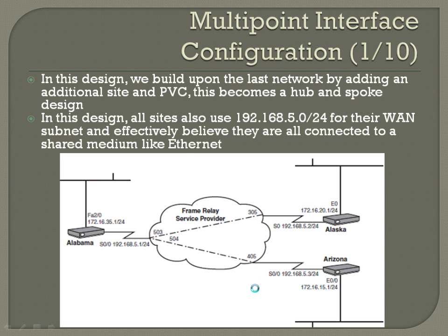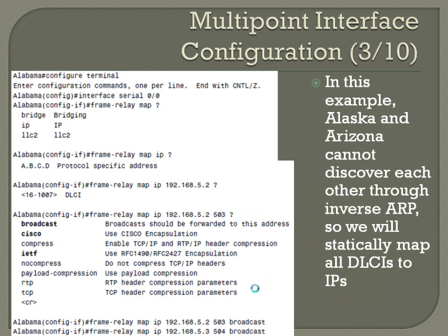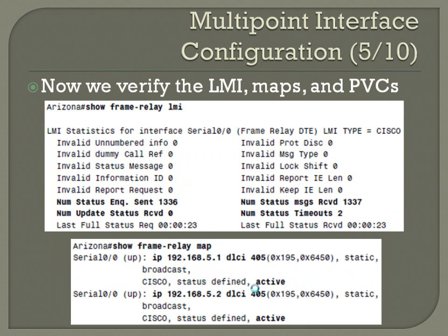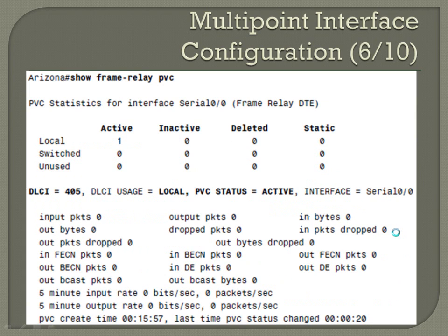Now we verify the LMI maps and PVCs. Show frame-relay LMI — we're looking at these two numbers and comparing them to these two numbers over here. They're very close, nothing to really be worried about. If you do a show frame-relay map, you can see the IPs mapped to each DLCI. On Arizona, .1 is mapped to 405 and .2 is also mapped to 405 — both active. Show frame-relay PVC — on Arizona you've only got the one, but it's local and active, DLCI number 405.